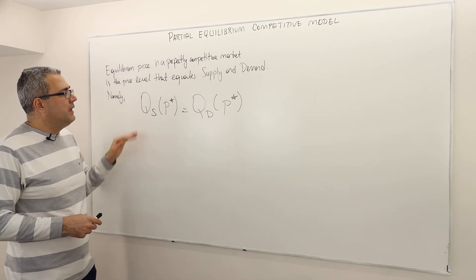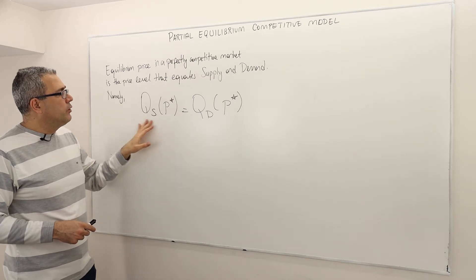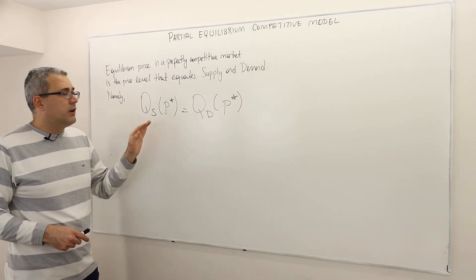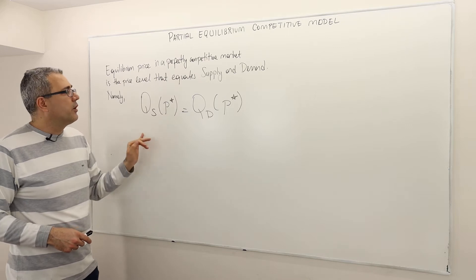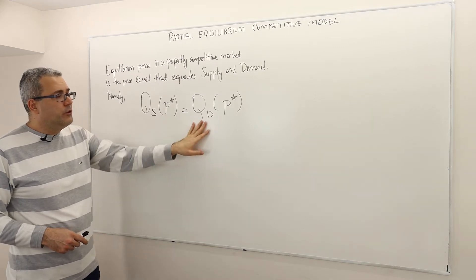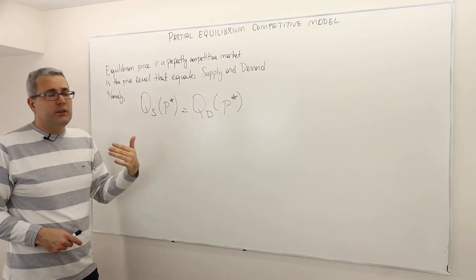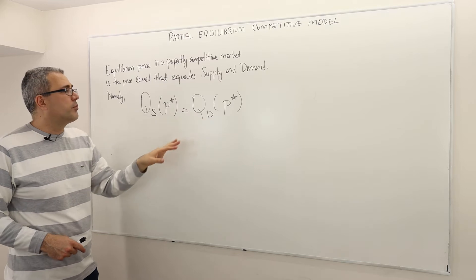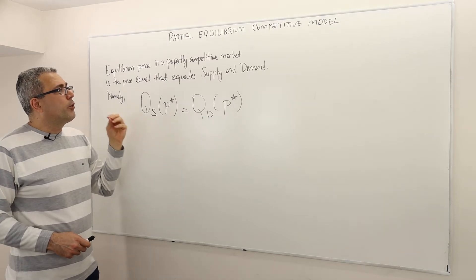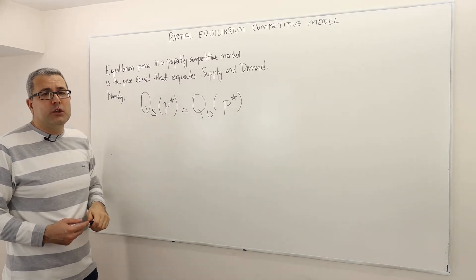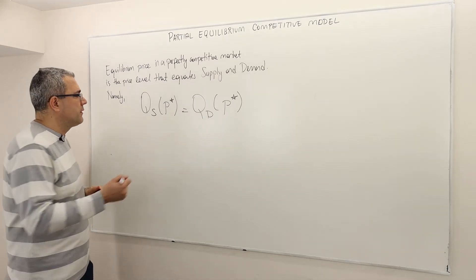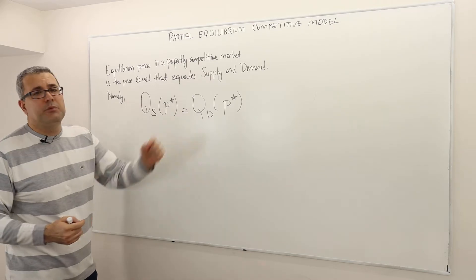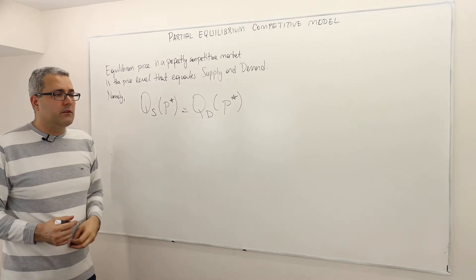Mathematically, that means if Qs is my supply function, which is a function of price, and Qd is my demand function, which is also a function of price, then the perfectly competitive equilibrium price is P*, which equates supply and demand.